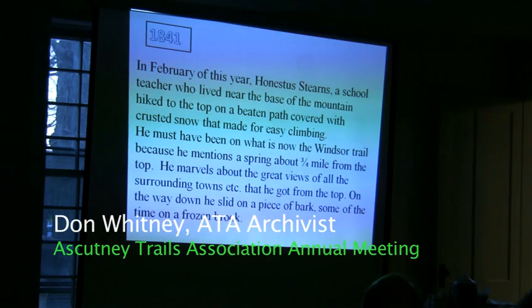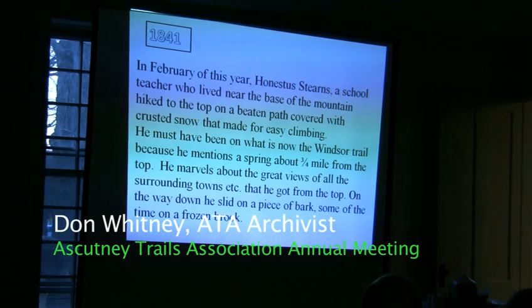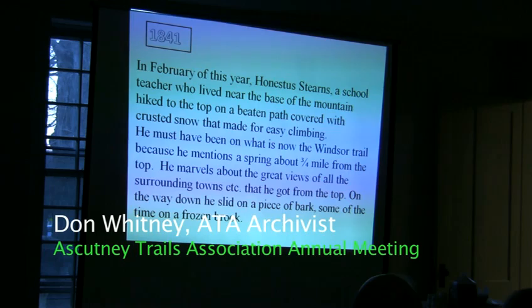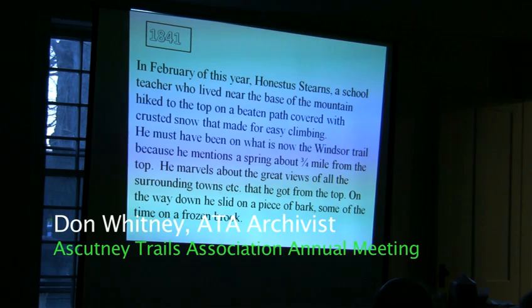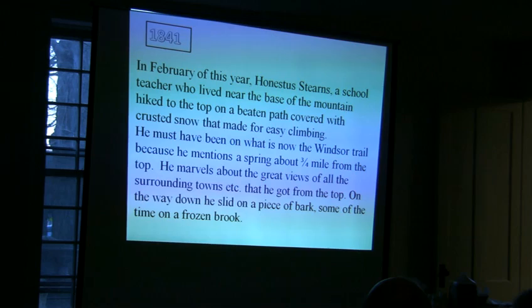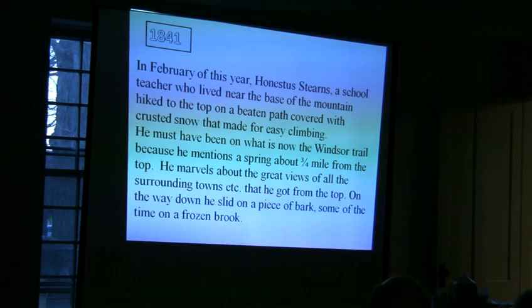Now we jump forward to 1841. I based this talk on what I could find in written words about Mount Ascutney. They had made some kind of road up Mount Ascutney, because they were going to take Lafayette up there in a buggy so he could get to a high point and look around. But being a day late, they didn't have time to take him up the mountain. In the history I've read, they don't really know how much of a road they got built, but we do know that later on a horse and buggy could make the trip.